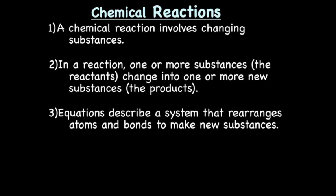Next we're going to do a quick review on chemical reactions. Stoichiometry is mathematical calculations using balanced chemical equations, so we need to remember what a chemical reaction and a chemical equation is. A chemical reaction involves changing substances — one or more substances known as the reactants, the things you start with, change into one or more new substances known as the products, the things you end up with. Equations describe a system that rearranges atoms and bonds to make new substances. A reaction is what occurs in your reaction dish; an equation is what you write down on paper.